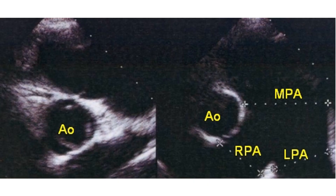Dilated main pulmonary artery, left pulmonary artery, and right pulmonary artery are seen on the short axis view of the 2D echocardiogram. Usually the aorta and main pulmonary artery are of comparable size; however, here the main pulmonary artery is grossly dilated and approximately twice the size of the aorta, due to severe pulmonary hypertension.